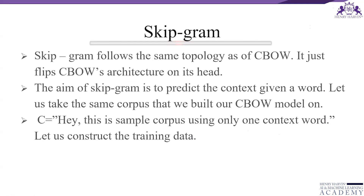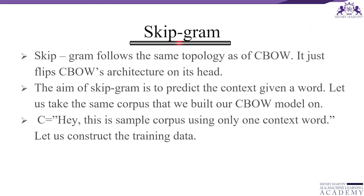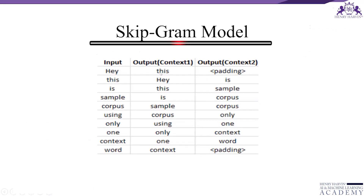The Skip-gram model is similar to CBOW but with a flipped architecture: given a word, it tries to predict the context. Using the same sample corpus with one context word, the output now contains the context words. The input vector for Skip-gram is similar to the one-context-word CBOW model, and calculations up to the hidden layer activations are the same.